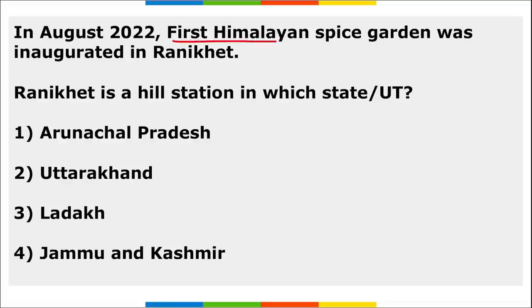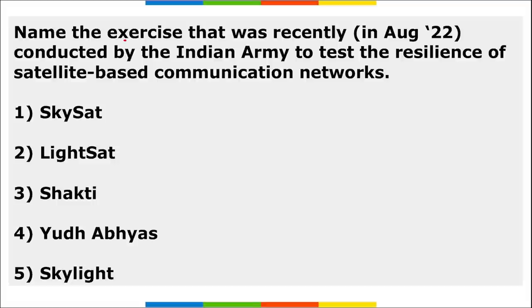The first Himalayan Spice Garden was inaugurated at Ranikhet. In which state or union territory is Ranikhet located? Ranikhet is a hill station located in Uttarakhand.